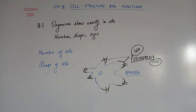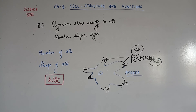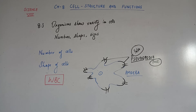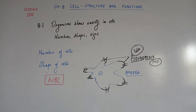A white blood cell in human blood is another example of a single cell which can change its shape. In humans, WBCs (white blood cells) are also single cells that can change their shape. However, a WBC is just one cell, whereas amoeba is a complete organism.